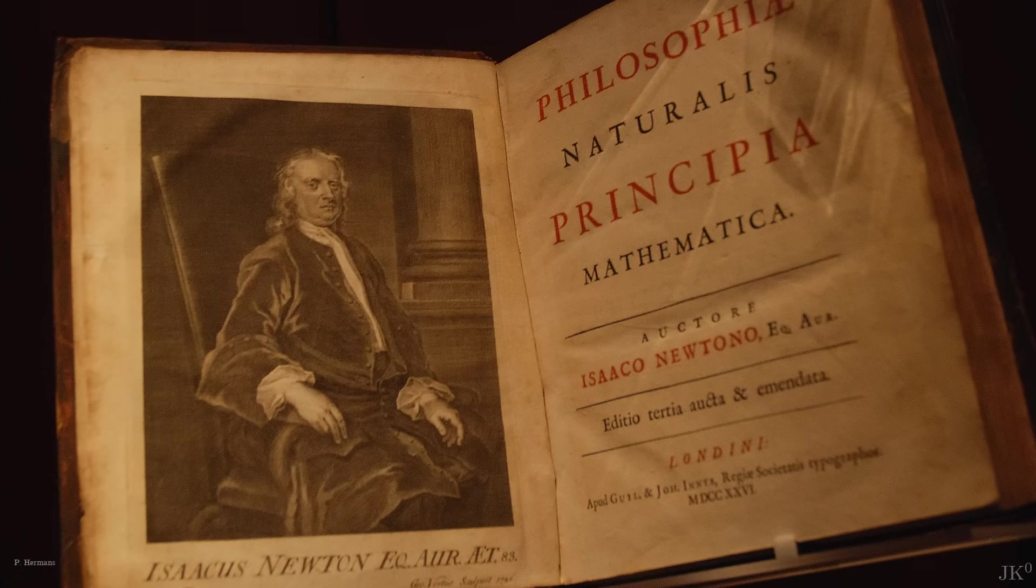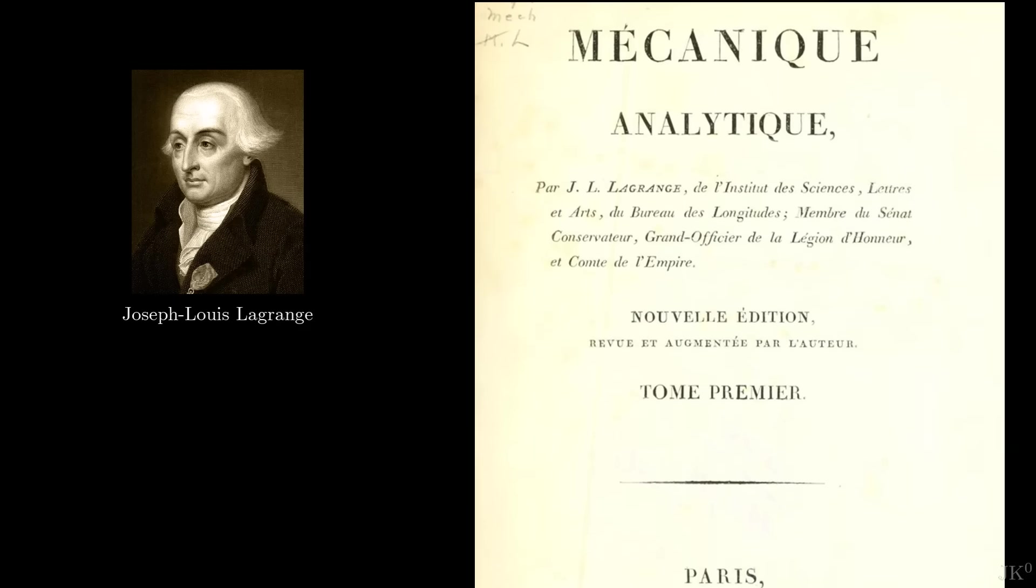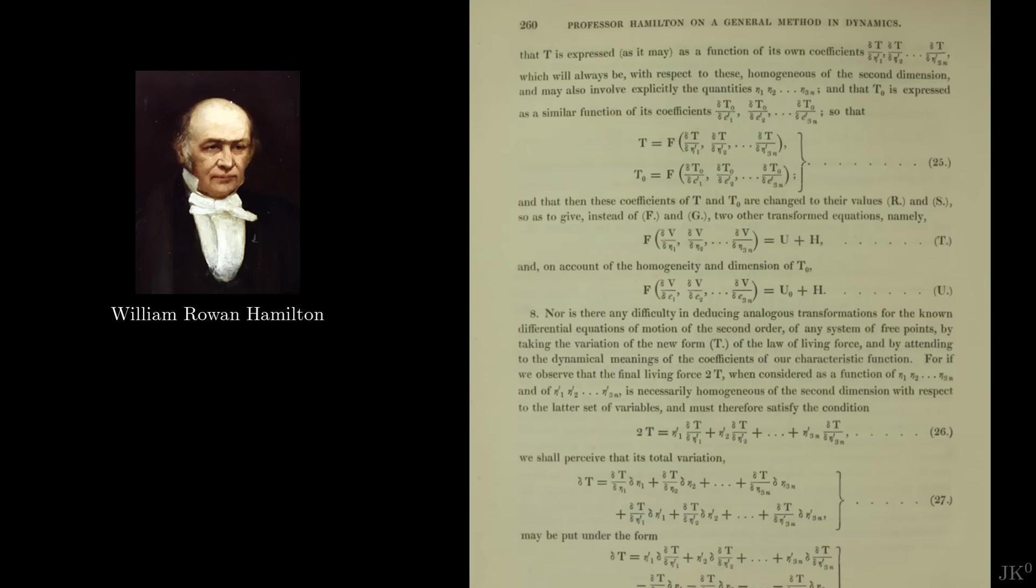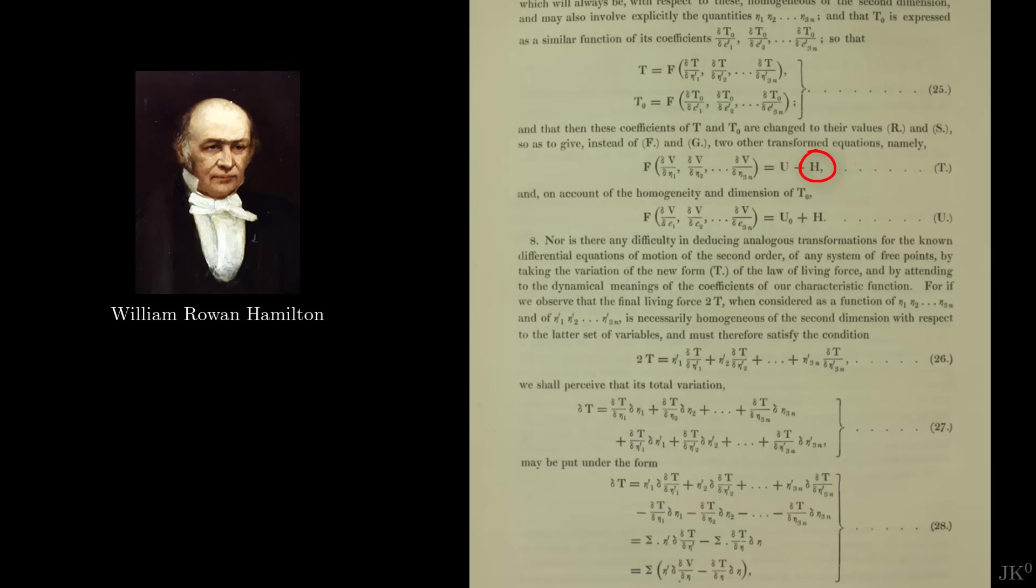Newtonian mechanics was reformulated by Lagrange, whose work was further refined by William Rowan Hamilton. Intended to just simplify the equations of motion, this Hamiltonian formulation of classical mechanics led to unexpected developments that paved the way for statistical mechanics and quantum mechanics.